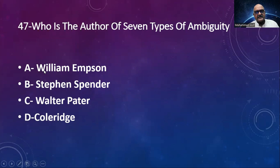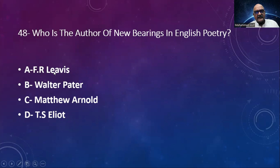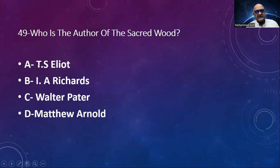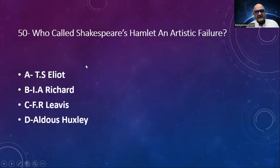Number 48: Who is the author of New Bearings in English Poetry? Options: F.R. Leavis, Walter Pater, Matthew Arnold, T.S. Eliot. The answer is F.R. Leavis. Number 49: Who is the author of The Sacred Wood? Options: T.S. Eliot, I.A. Richards, Walter Pater, Matthew Arnold. The answer is T.S. Eliot. Number 50: Who called Shakespeare's Hamlet an artistic failure? Options: T.S. Eliot, I.A. Richards, F.R. Leavis, Aldous Huxley. It was T.S. Eliot.